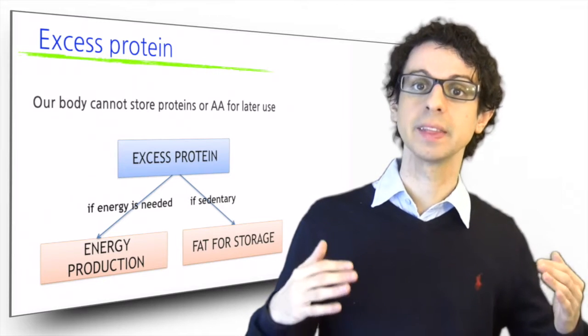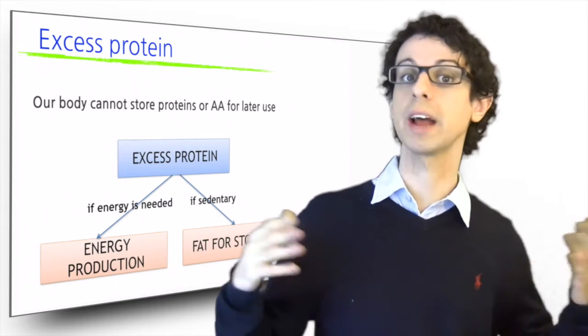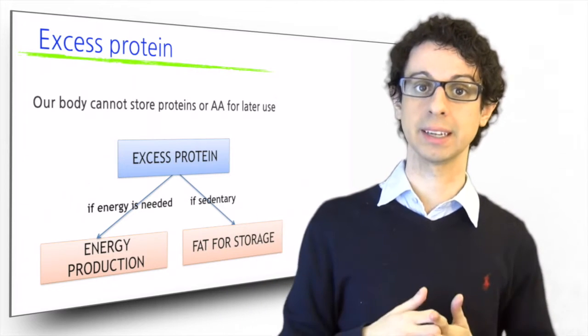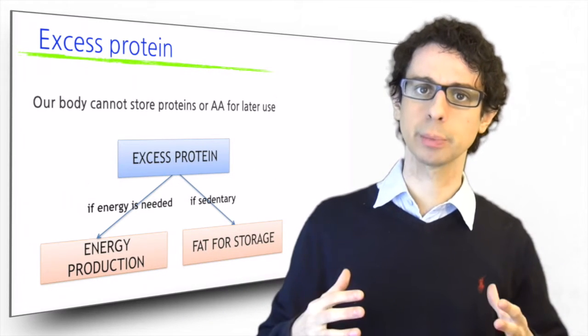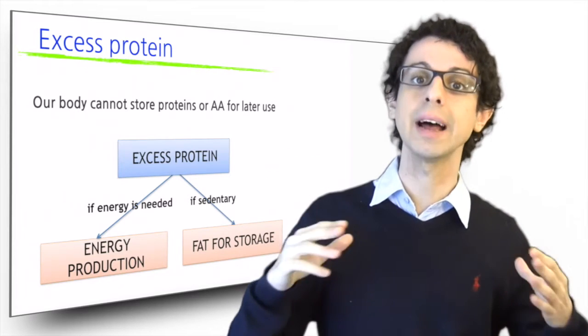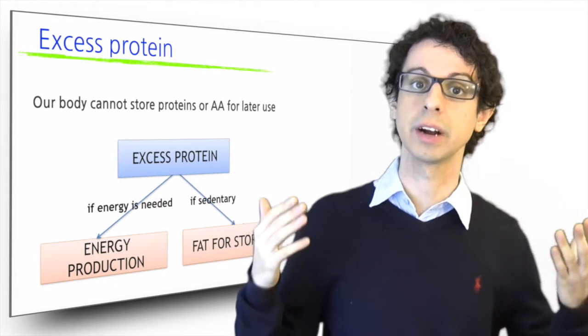If we need energy, then we will use the extra protein for energy production. And this is the case of athletes on high protein diets. They get all these extra proteins, they need a tiny little bit more for muscle growth, and the rest they just end up using for energy.